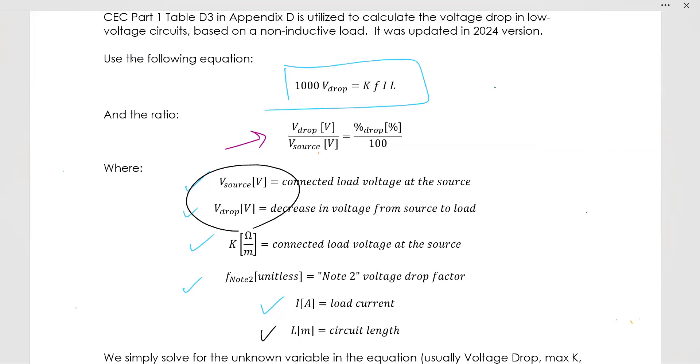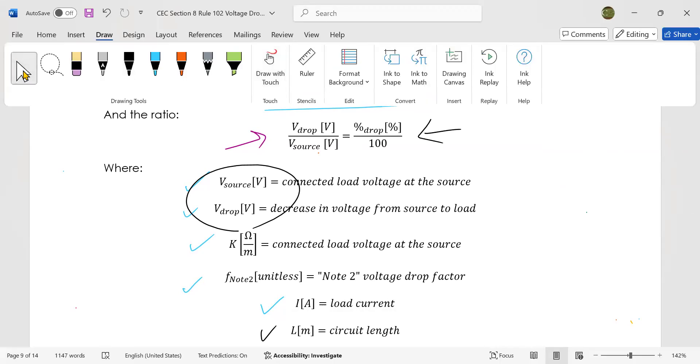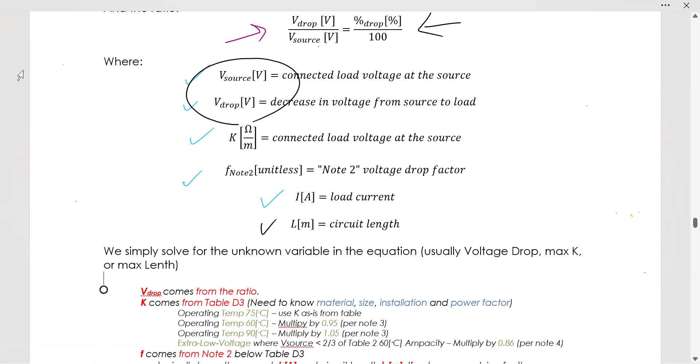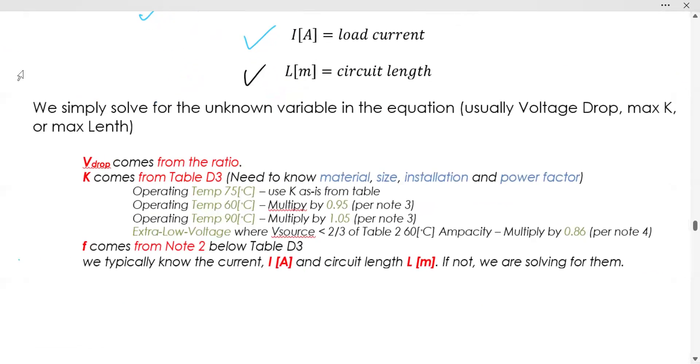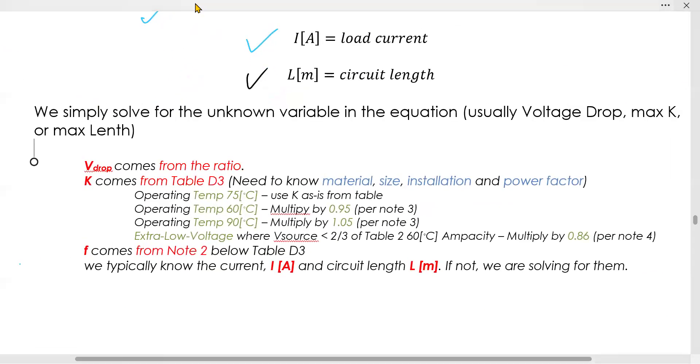When you're calculating voltage source and voltage drop, here's a handy ratio for you, which you probably already are comfortable with. In order to get the K value, it is in table D3.